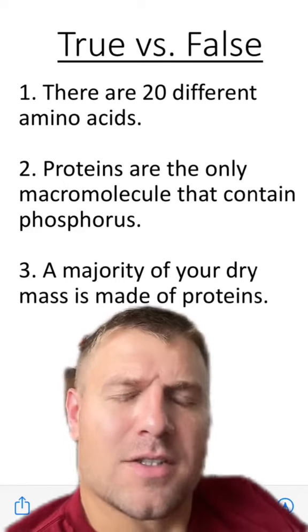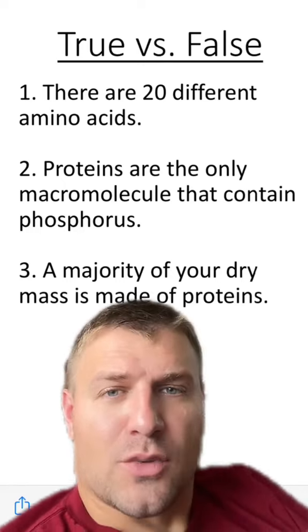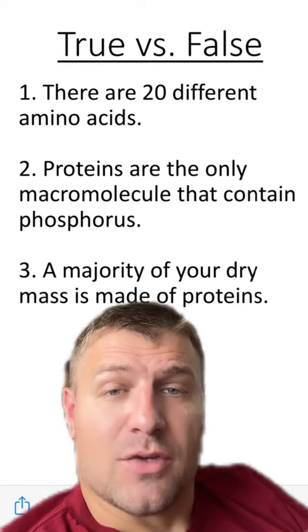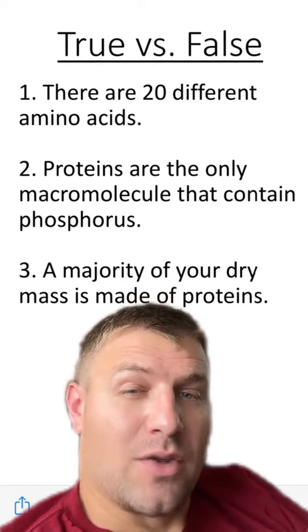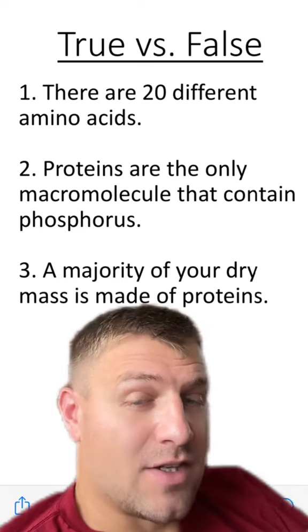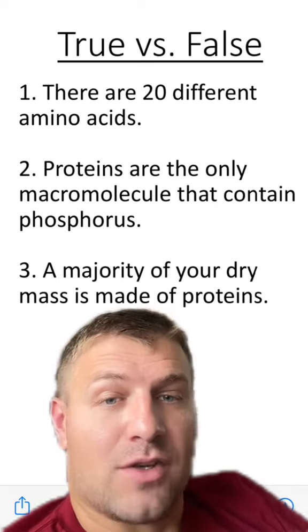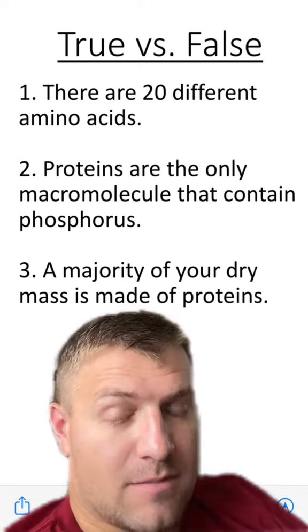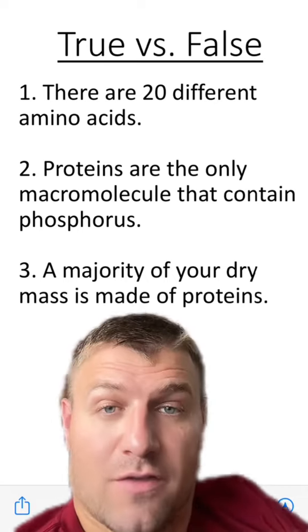Let's cover some true and false statements about proteins. Number one says there are 20 different types of amino acids. Number two says proteins are the only macromolecule that contain phosphorus. Number three says a majority of your dry mass is made of proteins. Which of these are true and which are false?